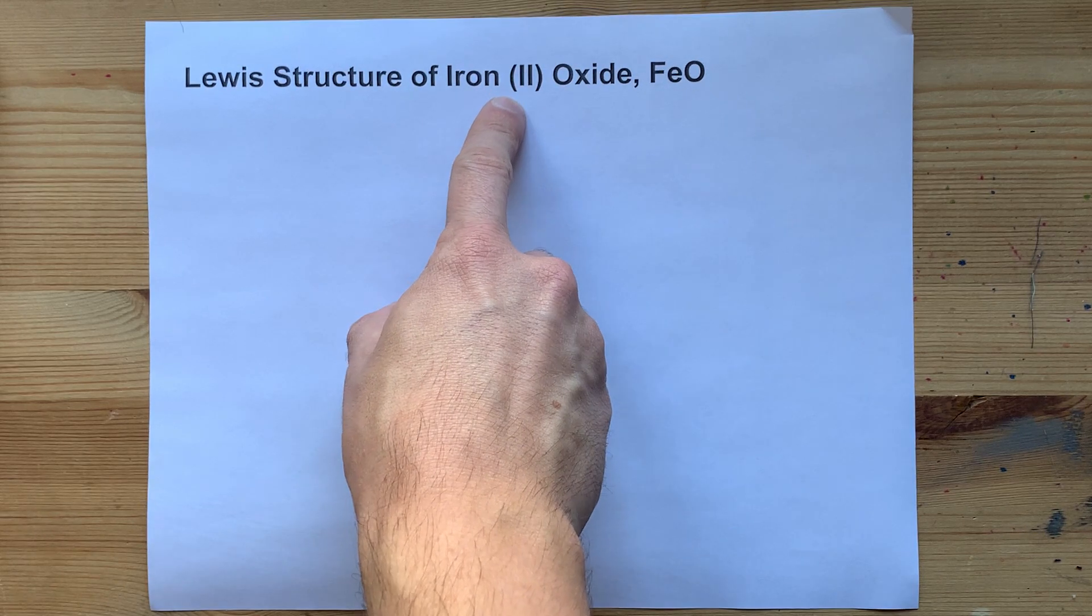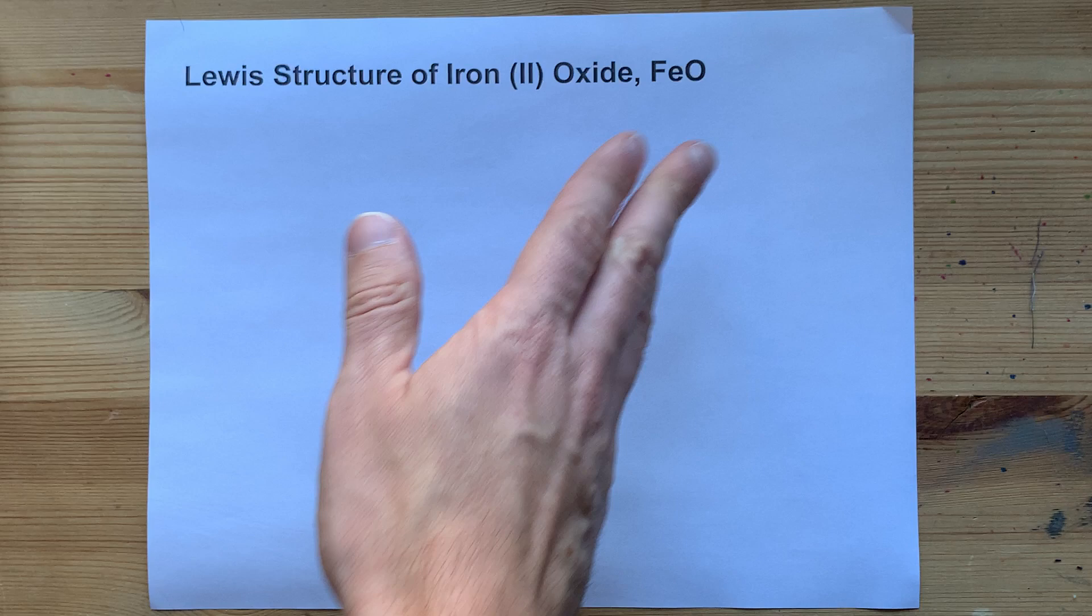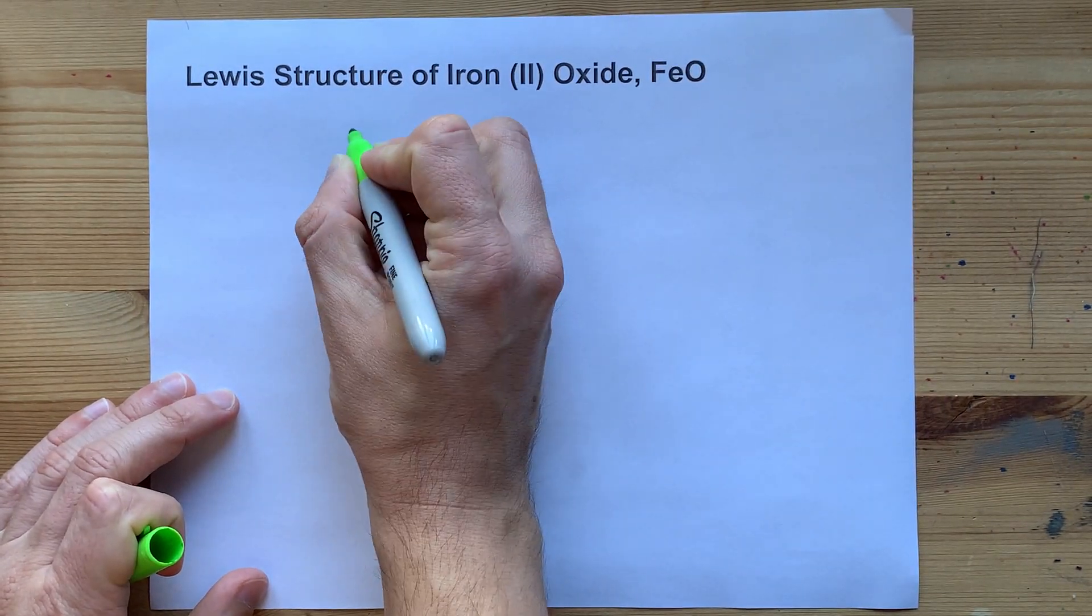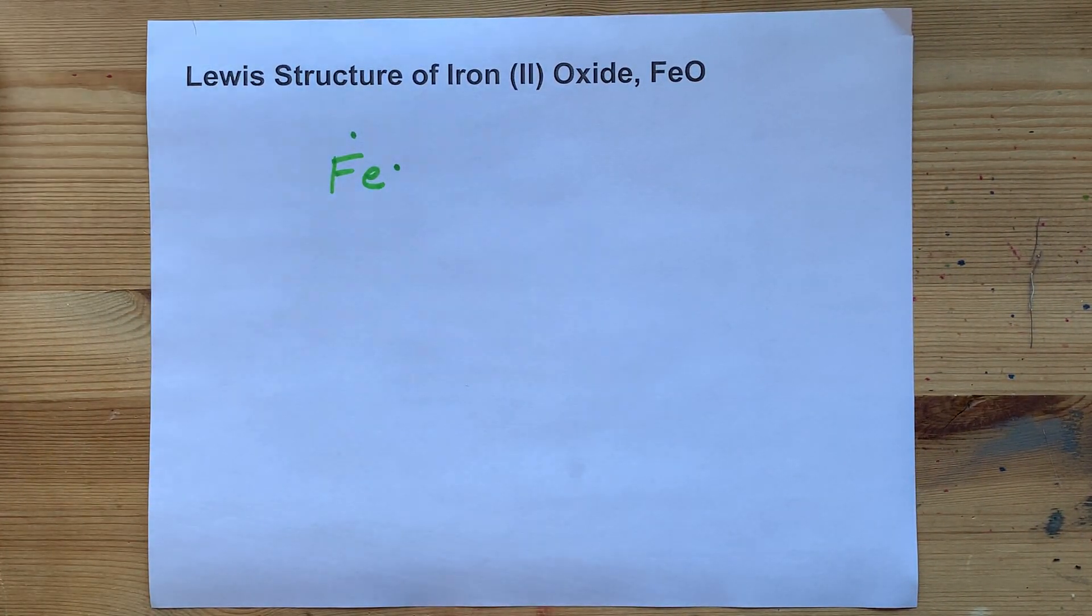Now, you're being told that the iron here has a charge of plus 2. When you're told the valence on a transition metal, you're supposed to assume that that's how many valence electrons it brings. So there's my iron atom with its two valence electrons.